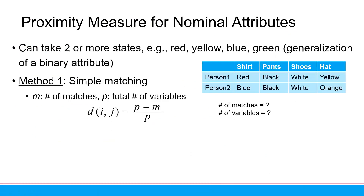We will first learn about the nominal attribute. If it is a nominal attribute, you know it is a category. Category data can take two or more states. For example, color — color is nominal, not ordinal. Please remember the difference between nominal and ordinal. Nominal is just a category without order. For example, red, green, blue — there is no order.